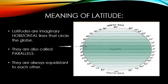Latitudes are imaginary horizontal lines that circle the globe. They are also called parallels. They are always equidistant to each other.